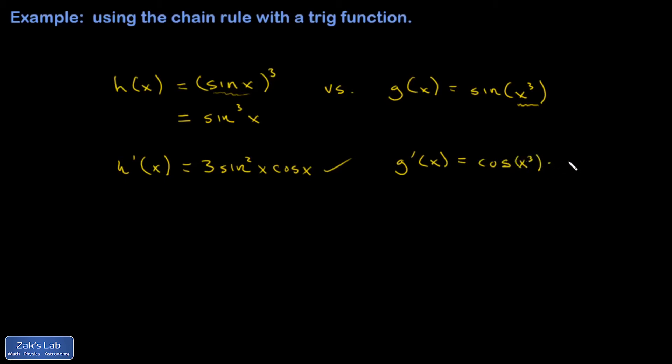And then the chain rule says you've got to tack on the derivative of the argument with respect to x. So the derivative of the interior with respect to x, which is 3x squared. It's probably a little more polite to write this one with the 3x squared in front. And we're done.